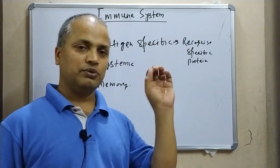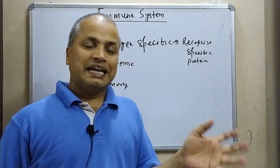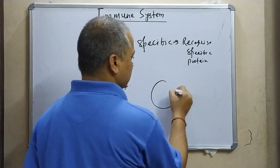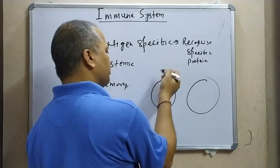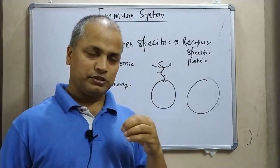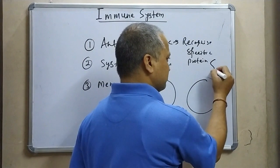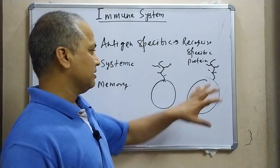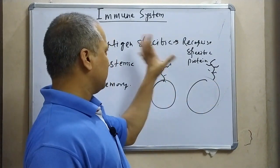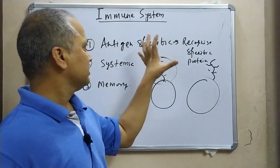Our immune system recognizes a particular component as self or non-self depending on its antigen. For example, our cells have sialic acid — a polysaccharide — on their surface, which helps the immune system recognize them as self. Normally bacterial cells do not have sialic acid, but if a bacterial cell somehow acquires sialic acid, the immune system will recognize it as self and will not be able to kill it. So the immune system recognizes antigenic components as self or non-self — it is antigen-specific.